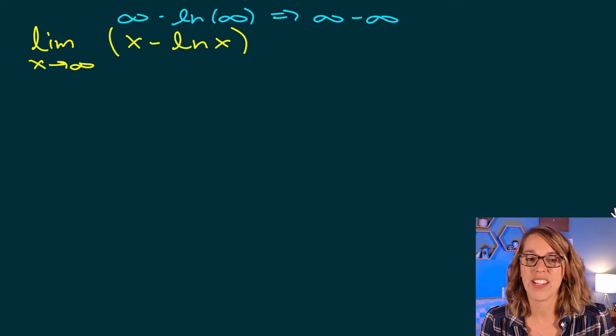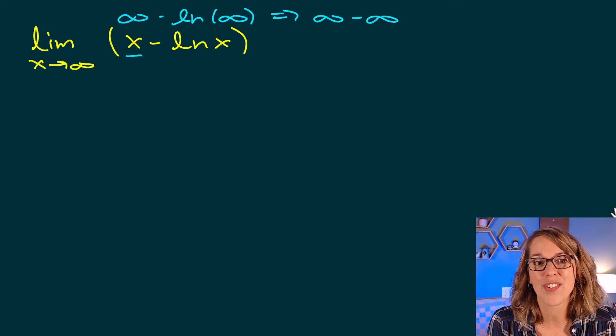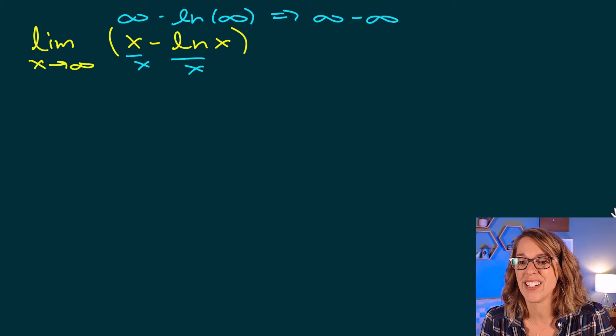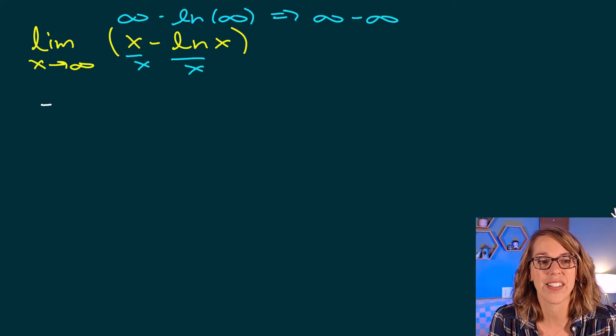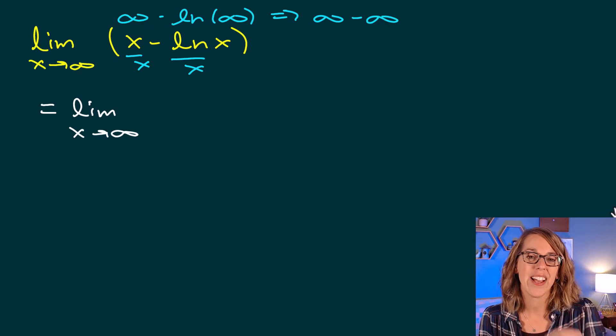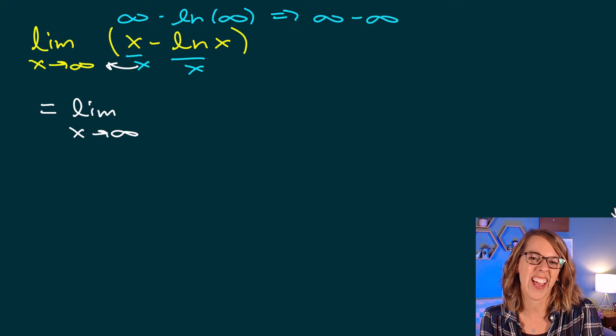I'm going to get that quotient in there by dividing or factoring out an x. So I'm just manipulating this so I can get a quotient and look what I end up with. So as I do that, I get the limit still as x approaches infinity. We're going to hang on to that for a second. I really am factoring this x out.